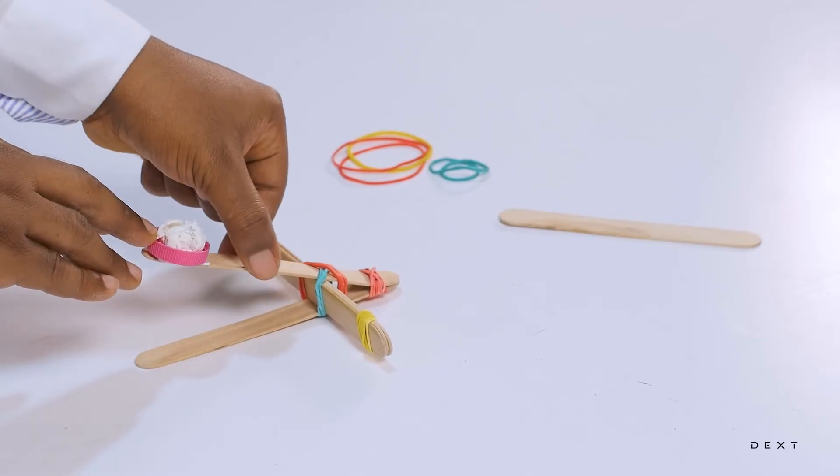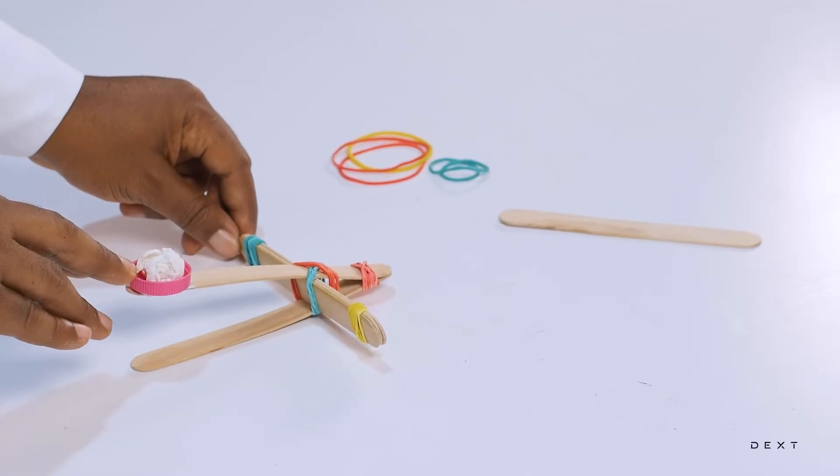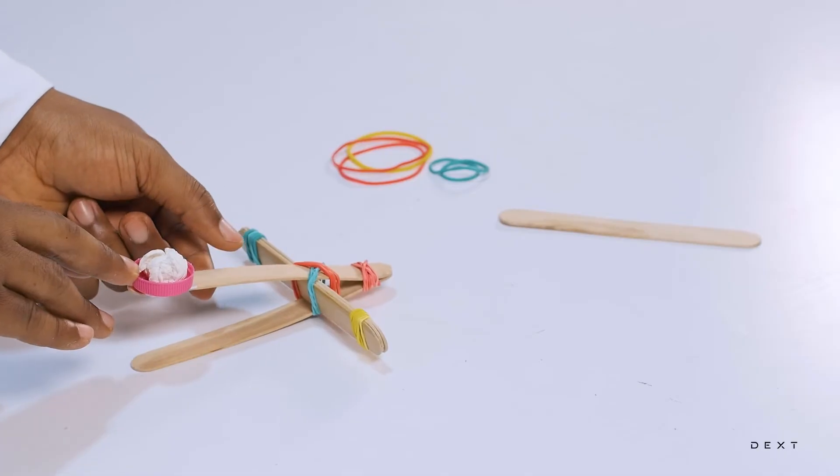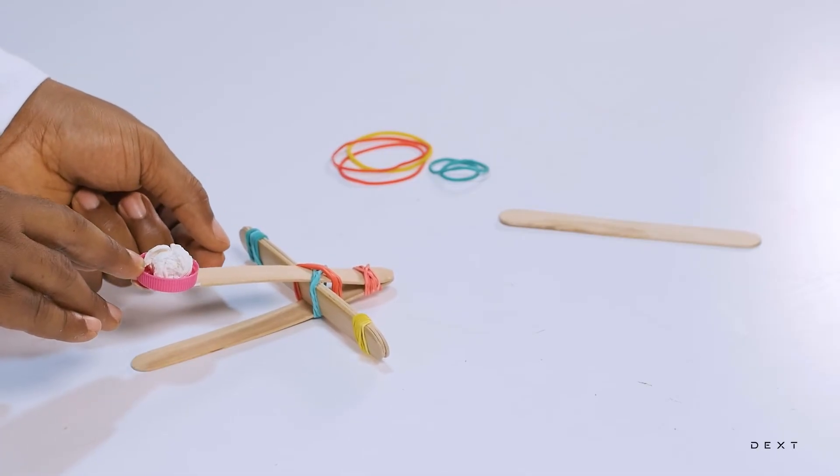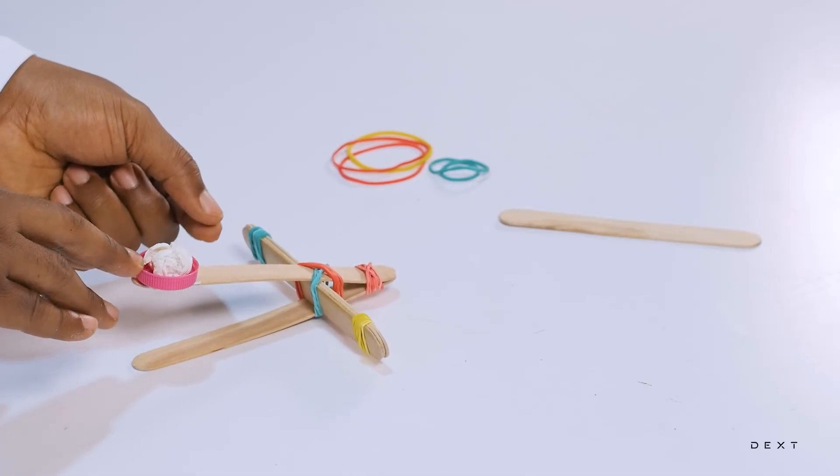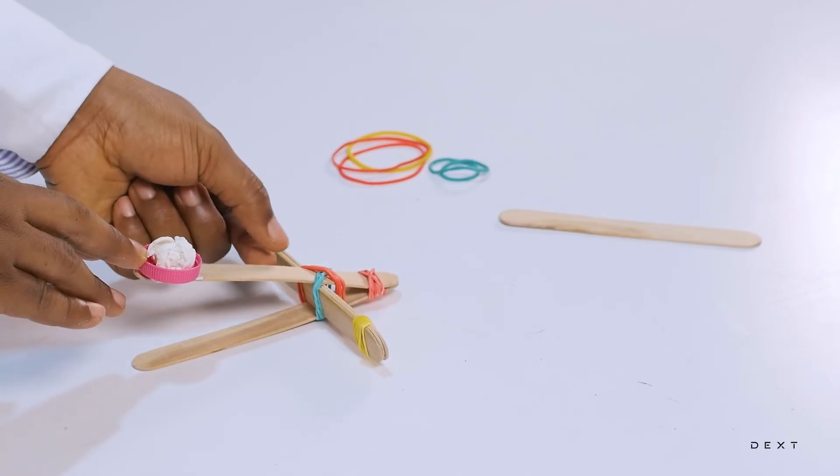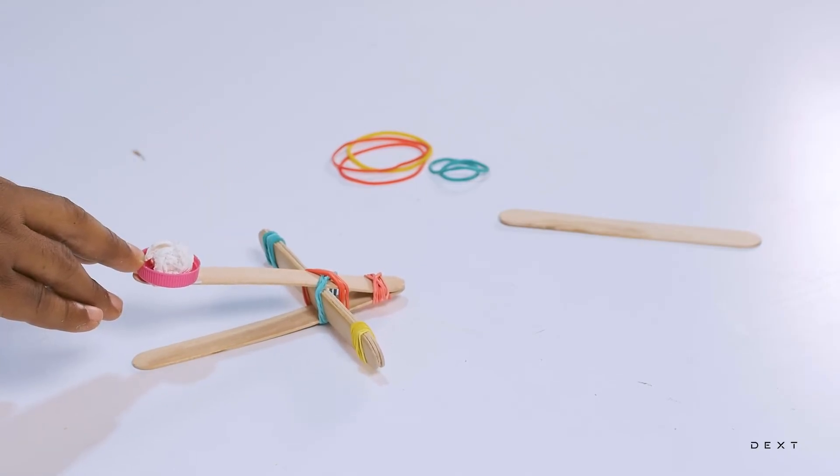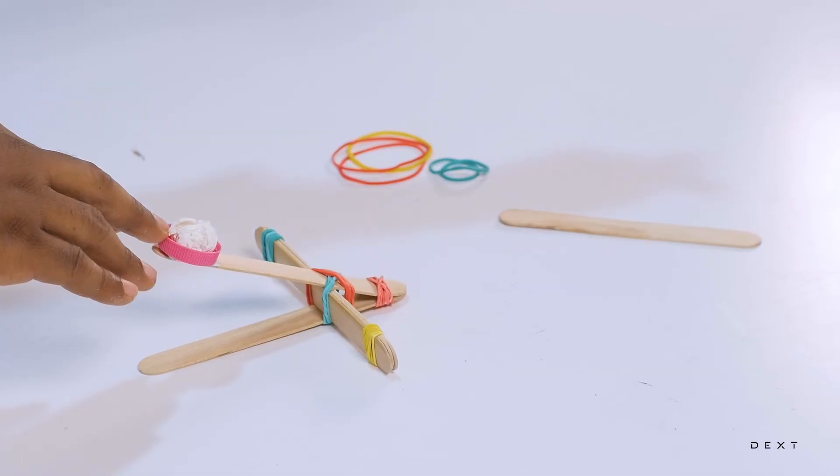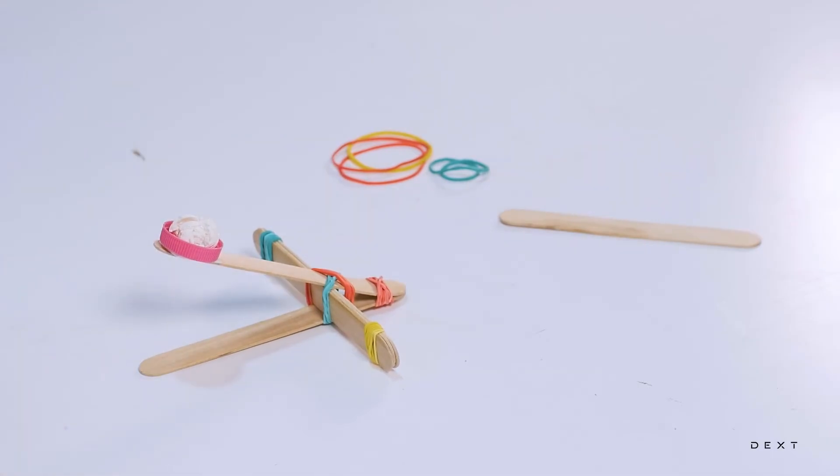It's thin enough that it's actually bending. And, that is essentially acting as though it's an elastic material. And, it's storing the force that we are applying. And, once we release, it's going to let it go and then throw the ball away.